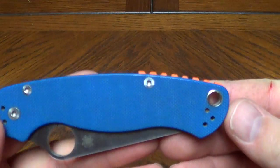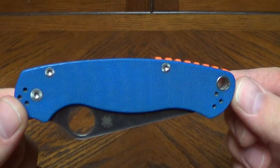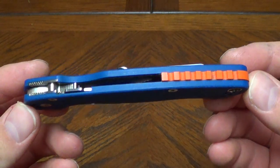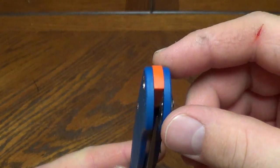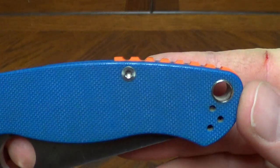What's going on guys, Steel here doing a video tonight on a custom backspacer I had done for my Paramilitary 2. This was done by Johnny Sykes, you can find him over on USN. I just thought it'd be cool to get one, they're really well priced.